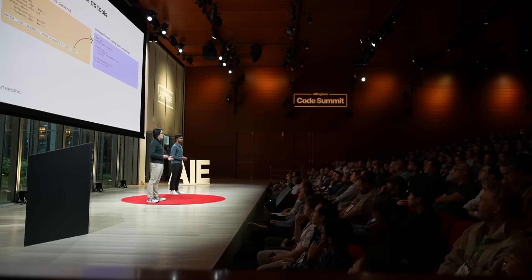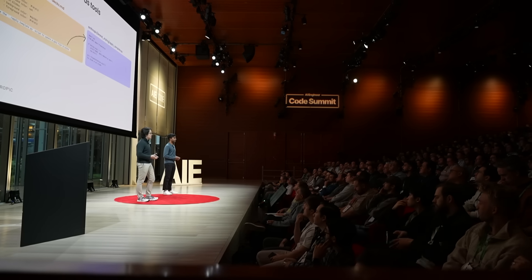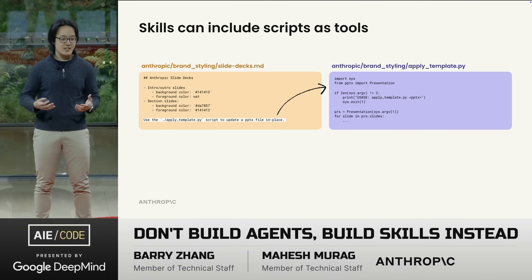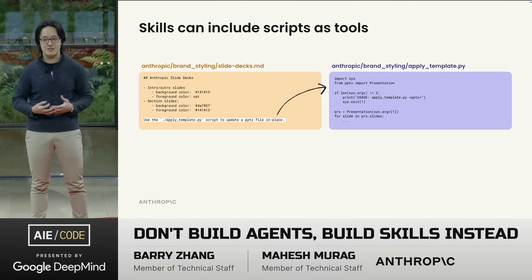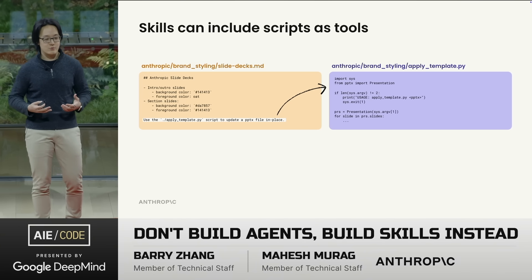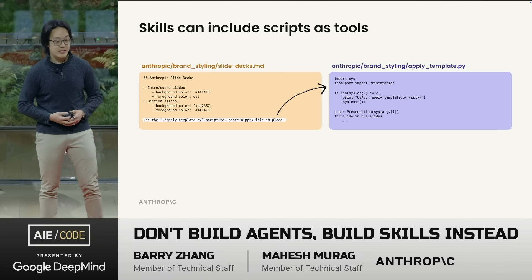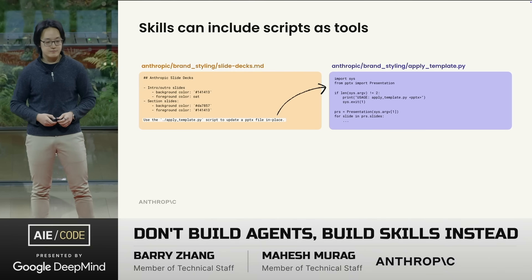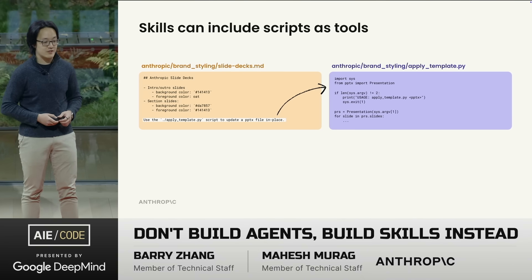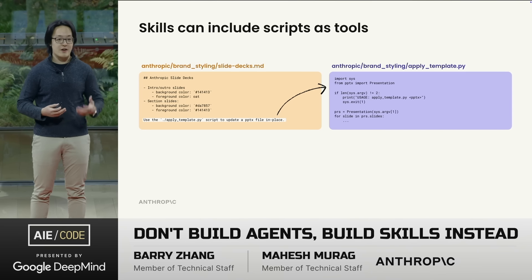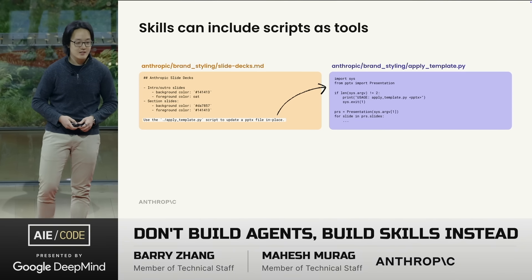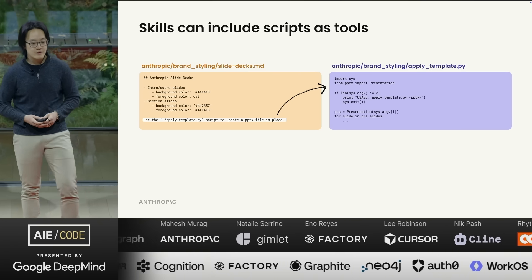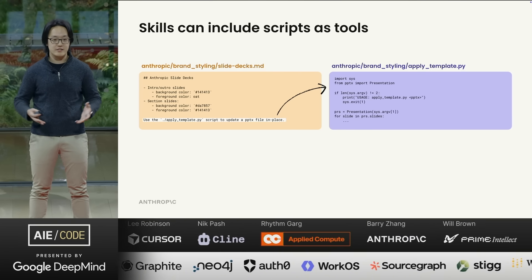Because of that, skills can also include scripts as tools. Traditional tools have pretty obvious problems — some have poorly written instructions and are pretty ambiguous. And when the model is struggling, it can't really make a change to the tool, so it's kind of stuck with a cold start problem. And they always live in the context window. Code solves some of these issues. It's self-documenting, it is modifiable, and it can live in the file system until it's really needed. Here's an example of a script inside of a skill. We kept seeing Claude write the same Python script over and over again to apply styling to slides, so we just asked Claude to save it inside of the skill as a tool for its future self. Now we can just run the script, and that makes everything a lot more consistent and efficient.